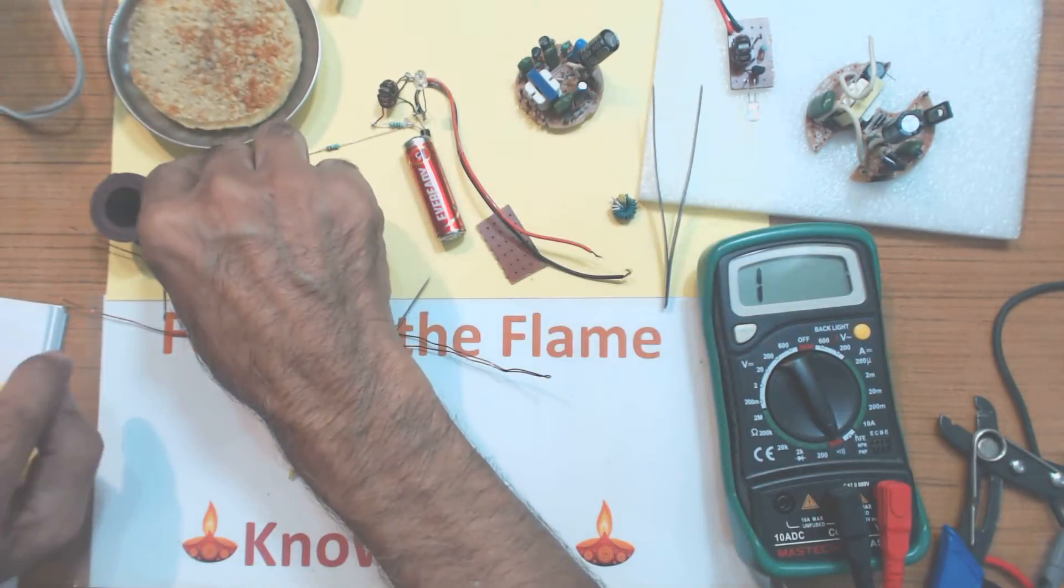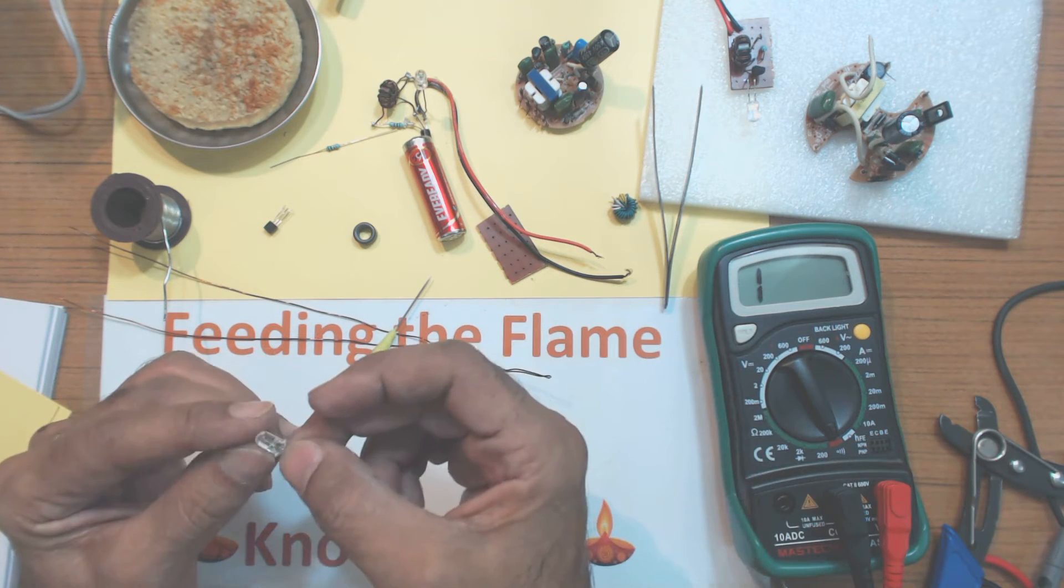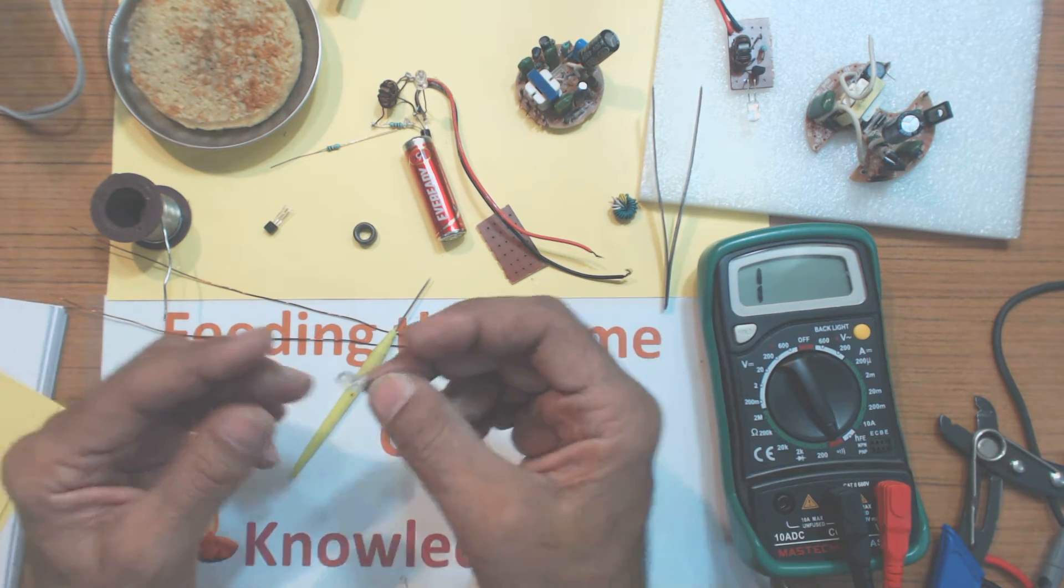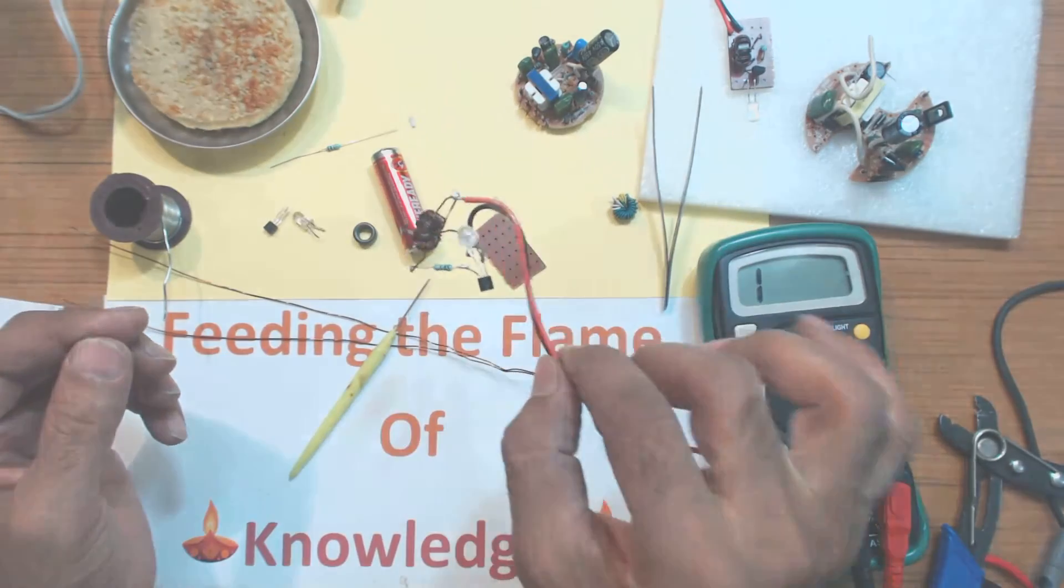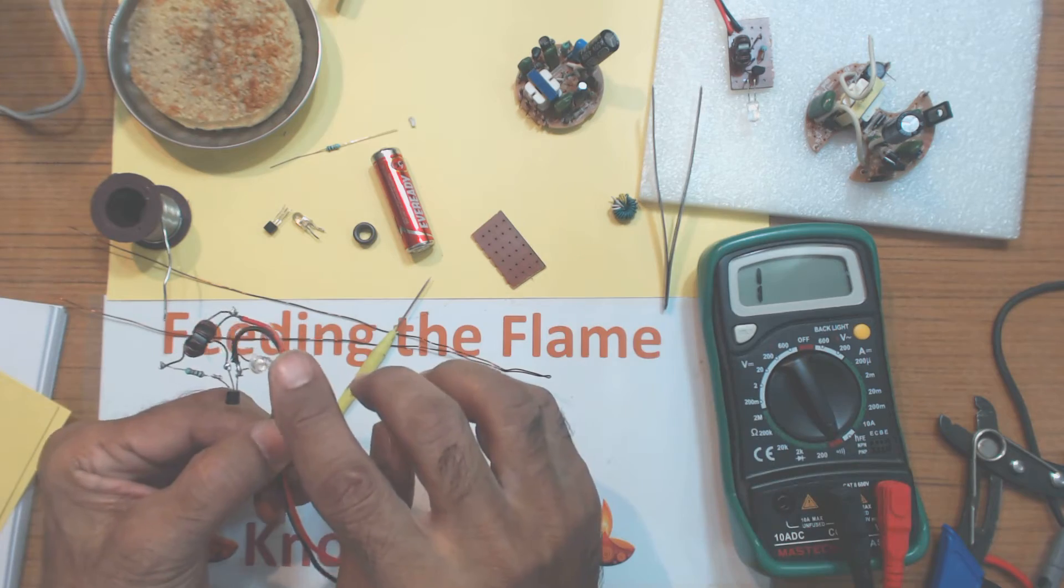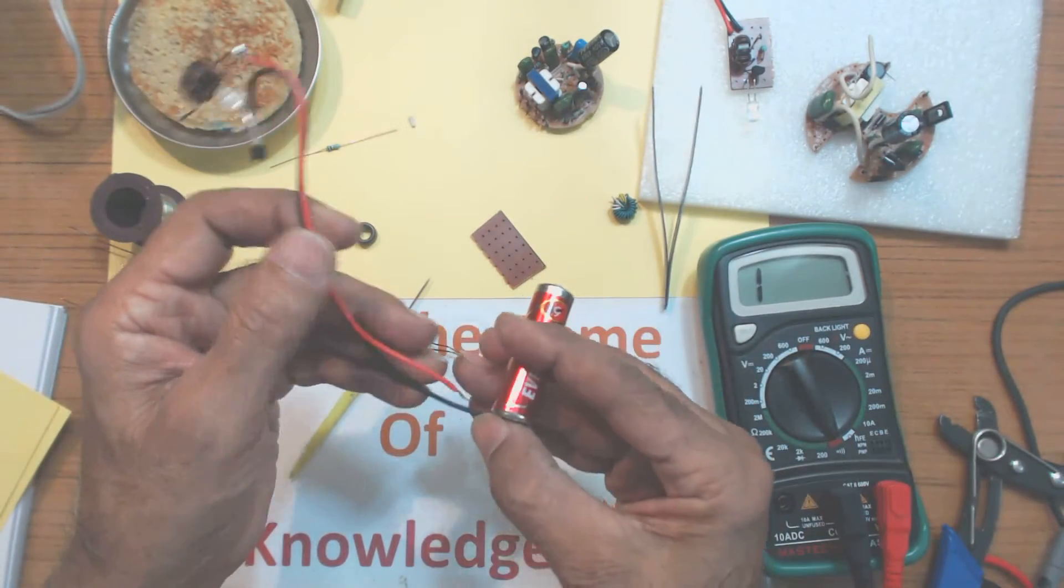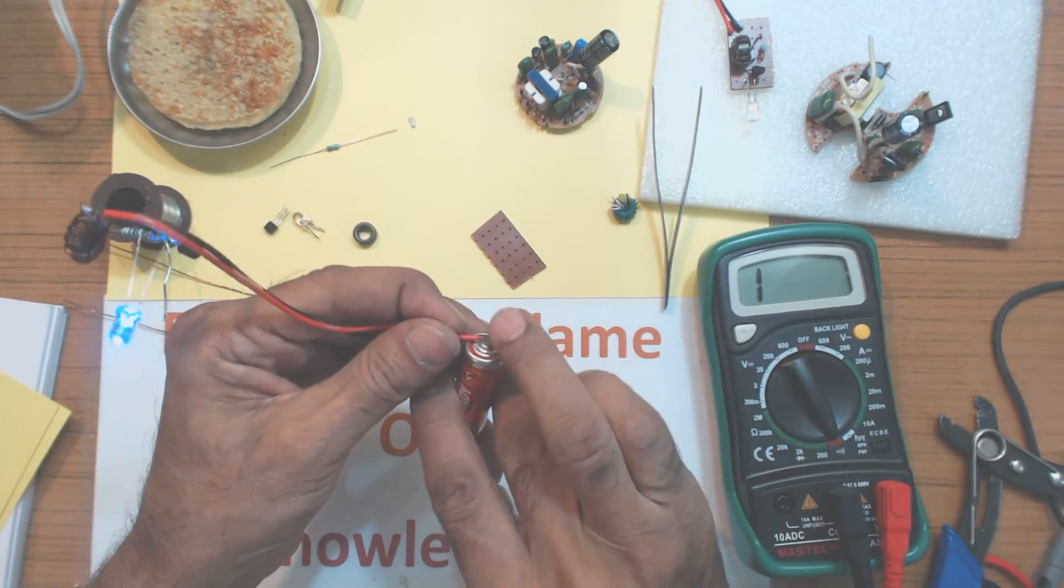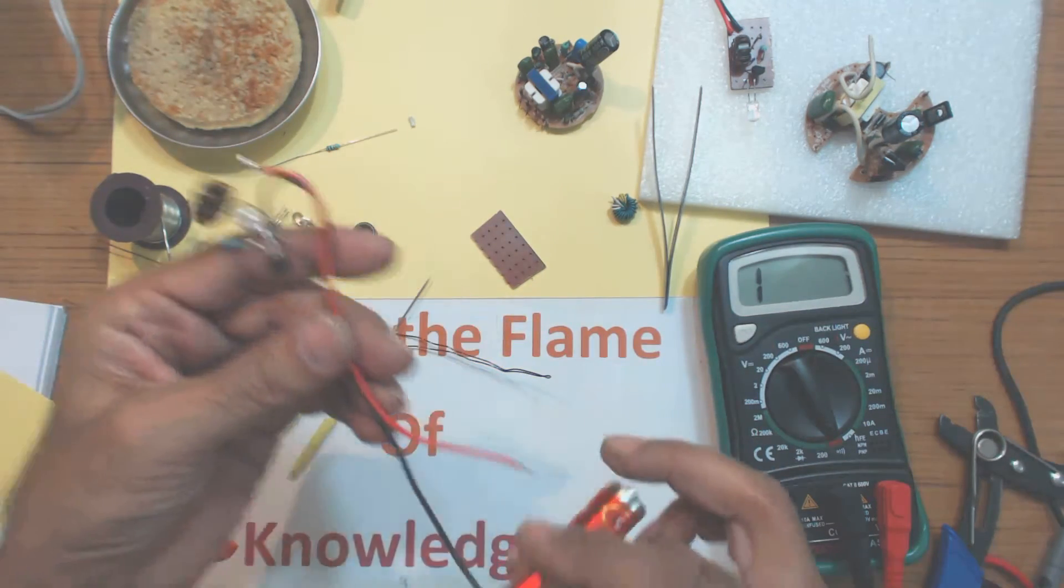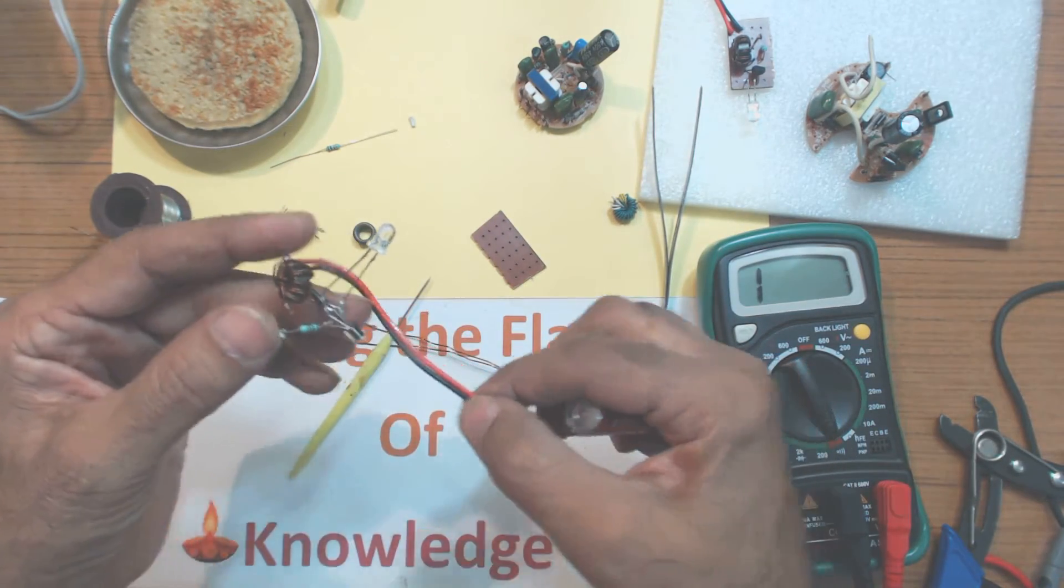Now normally you cannot light up an LED with 1.5 volt battery. You need at least 3 volts to light it up. But with this circuit which I am going to describe, you can run the LED using just one single 1.5 volt battery. Here it is. So it lights up. And even with single battery, it will light up to full brightness. That is the beauty.